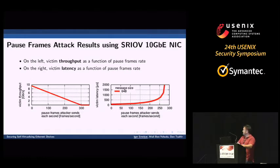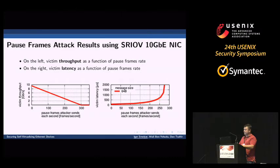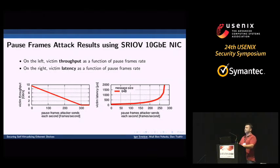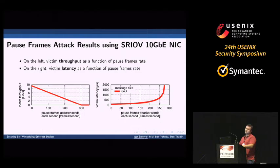Let's take a look at the results. We measured the victim's throughput on the Y axis and latency, with X being the pause frames the attacker sends per second. The graph is the throughput or latency as a function of pause frames sent by the attacker. The graph on the right shows victim latency and the graph on the left shows victim throughput. We can clearly see that the attacker can completely control throughput and latency with great precision.